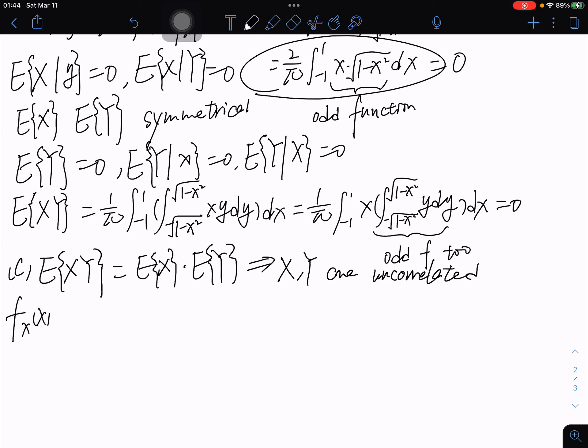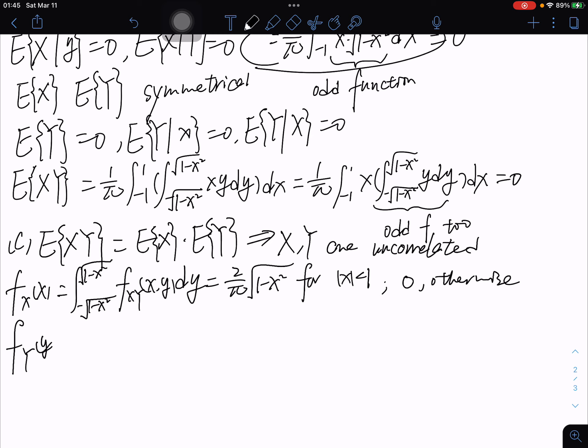What's more, we find that f_X equals the integral of f(x,y) dy, which equals π/2 times √(1-x²) for |x| smaller than 1, and zero otherwise. Symmetrically, f_Y(y) equals π/2·√(1-y²) for |y| smaller than 1, and zero otherwise.